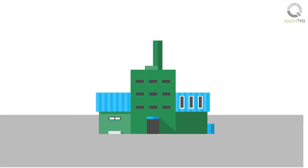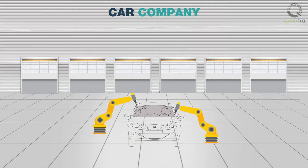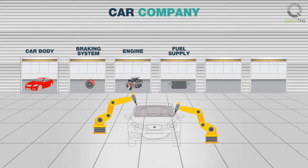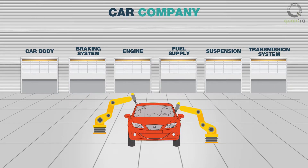For example, consider a car-making company. A car in itself is a complex product, consisting of a car body, the braking system, the engine, the fuel supply system, the suspension and steering system, the transmission system, and others. Usually, these parts are designed, developed, and tested independently in different departments of the company. These components are then assembled and dispatched as a whole product — the car.